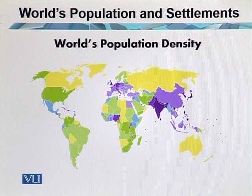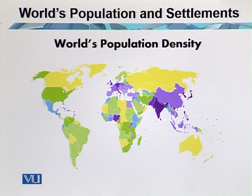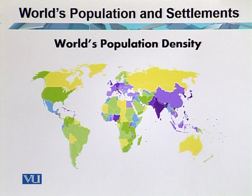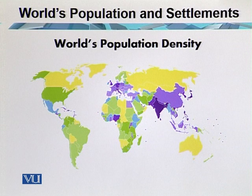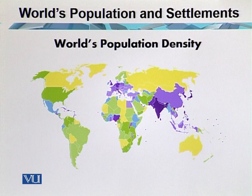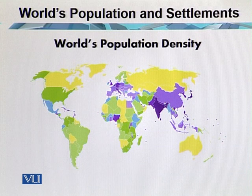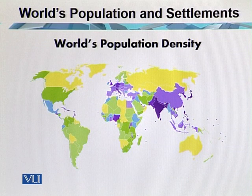When discussing population densities, two things are important. Number one is arithmetic population density — it is total area divided by the total number of population. Take Egypt, which with a population of 71.1 million in 2002 had a seemingly moderate arithmetic density of 185 per square mile. However, it is mostly desert and the vast majority of the population is crowded into the valley and delta of the River Nile. It is estimated that 98% of all Egyptians live on just 3% of the country's land, making the arithmetic population density figure pretty well meaningless here.